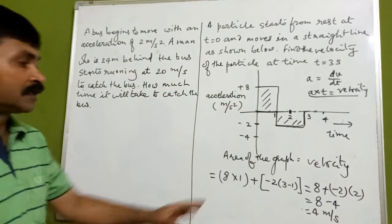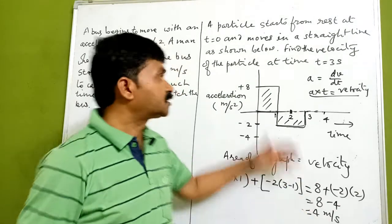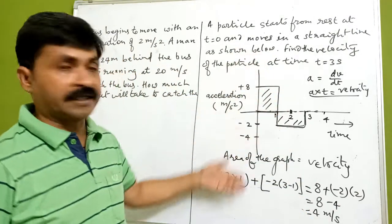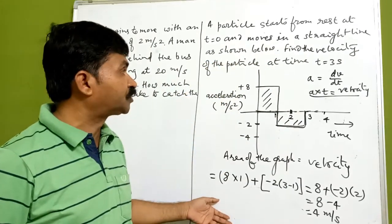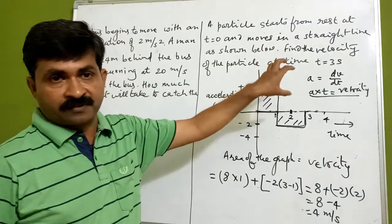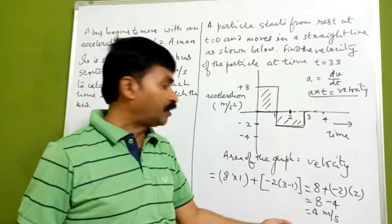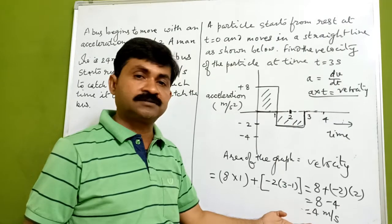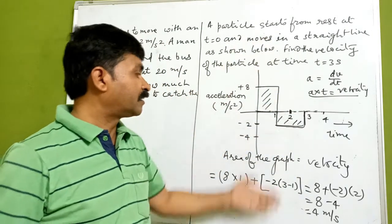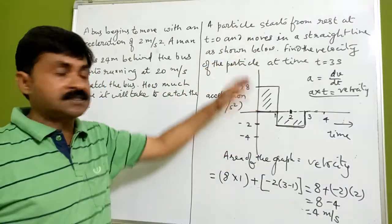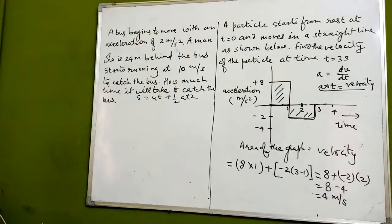The answer is 4 meters per second. This question may be asked as an objective type question where some options are given. This is how we can go through numericals for competitive exams.